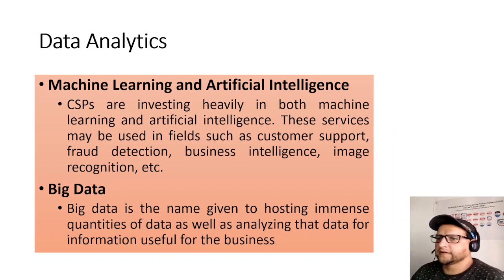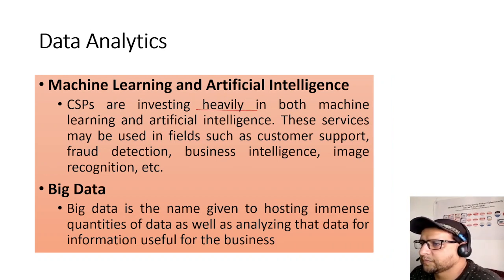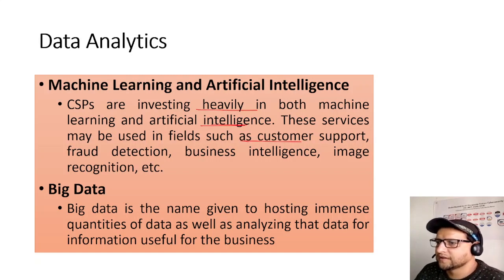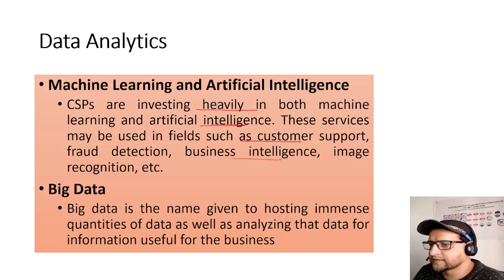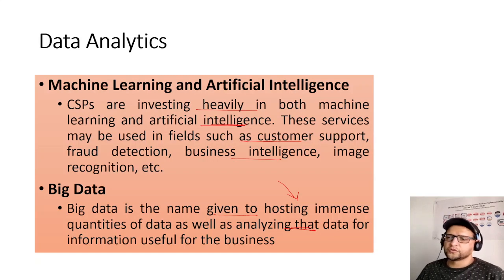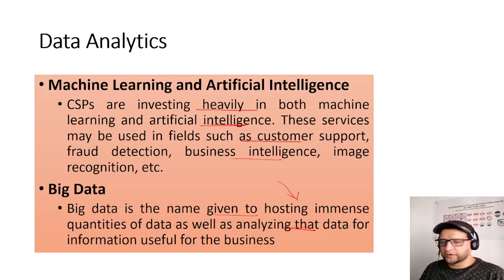Machine learning and artificial intelligence: CSPs are investing heavily in both ML and AI, used in fields such as customer service, fraud detection, business intelligence, and image recognition. Big data refers to hosting and analyzing immense quantities of data for business intelligence — driven by large volumes of data from sensors, IoT devices, and platforms like Hadoop.